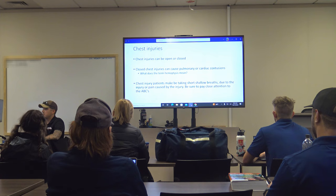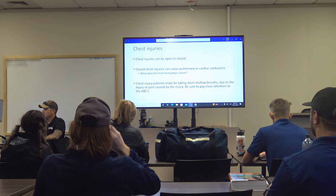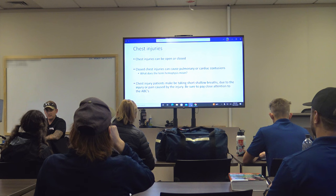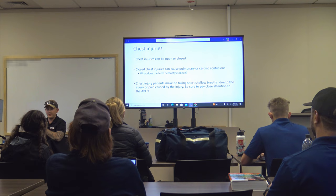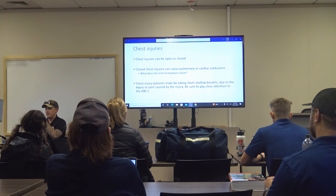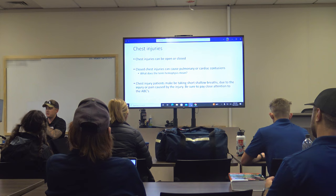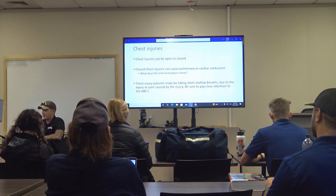Closed chest injuries cause pulmonary and cardiac contusions — bruising of the lungs and heart. Hemoptysis means coughing up blood, and many internal chest injuries will cause this. With a mechanism of injury like a car accident involving a blow to the chest, we look for pain, bruising, deformities, discoloration, and hemoptysis.